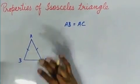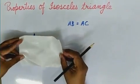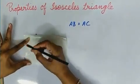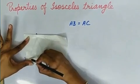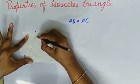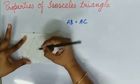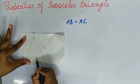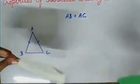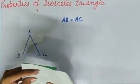After drawing the isosceles triangle, we will cut a replica of it. Replica means its copy. We will trace the triangle on butter paper and then cut it with a colored paper.